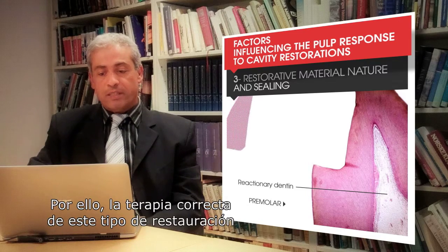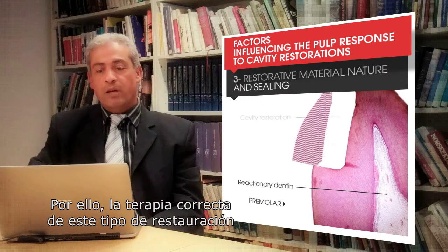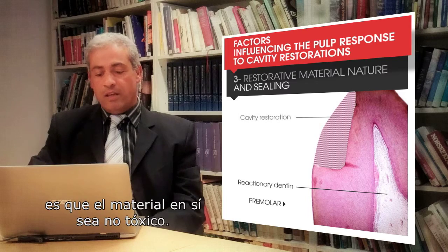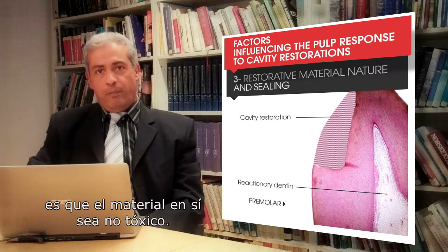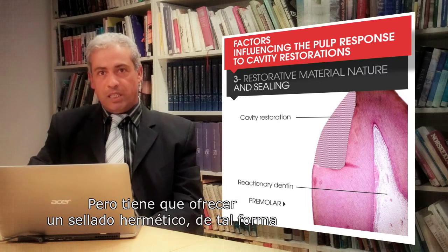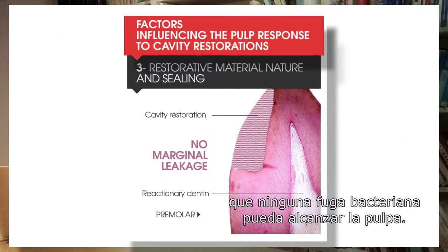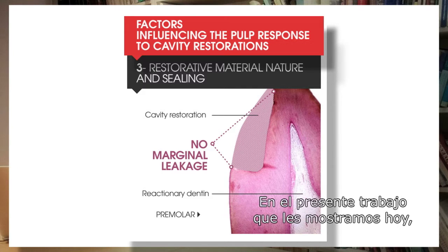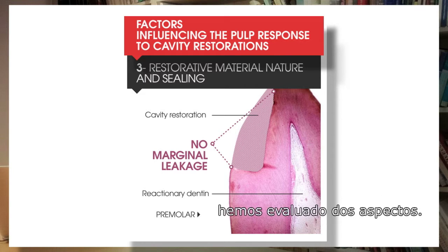So the successful therapy for this type of restoration requires that the material itself be non-toxic, and that it provides a hermetic seal such that no bacterial leakage can reach the pulp. In the present work we are going to show today, we evaluated two aspects.